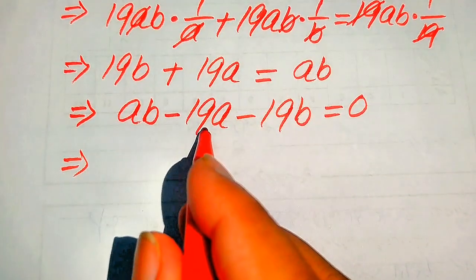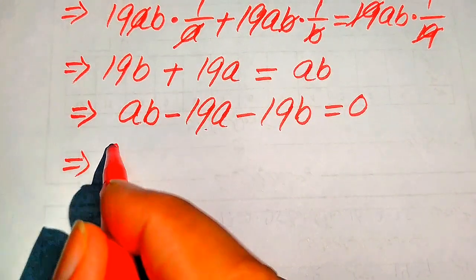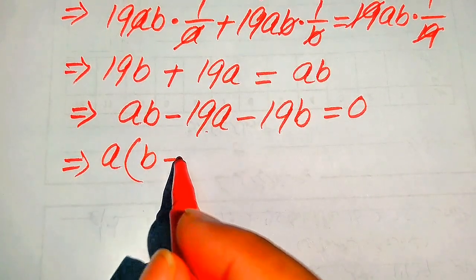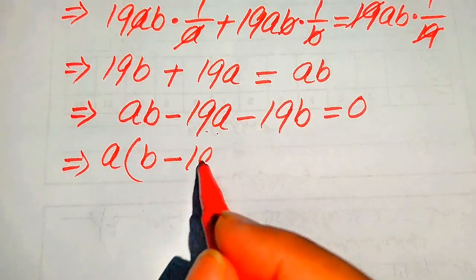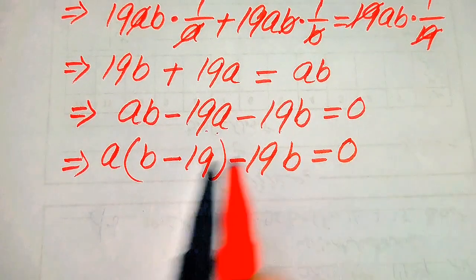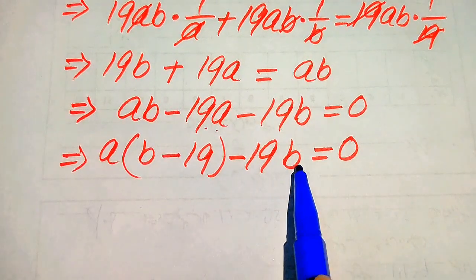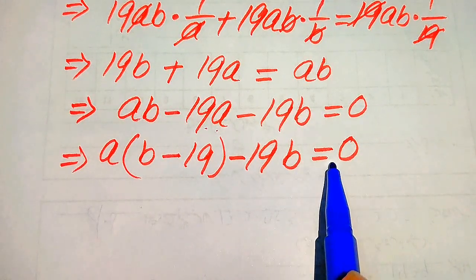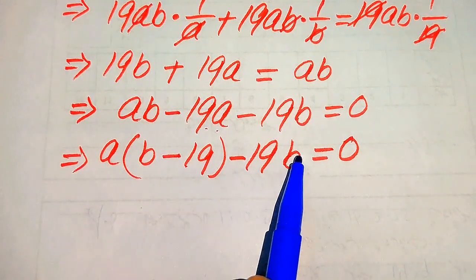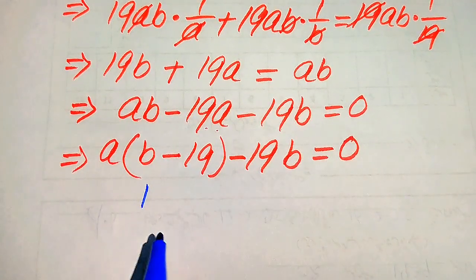Now, from the first two terms, a is common to both, so we take out a as a common factor. When we factor out a, we get a times (b minus 19), and the remaining term is minus 19b, giving us a(b minus 19) minus 19b equals 0.